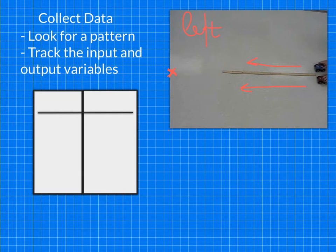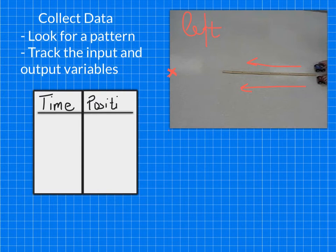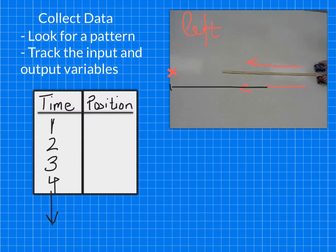We're going to collect data, and we're looking for a pattern, tracking the input and output variables. At every second that passes, I keep track of the seconds — so this is going to be time over here. I want to know what position the car is at at every time: at one second, two seconds, three seconds, four seconds, and so on. In the video, we tracked and wrote down the position marker from zero wherever it is at every second. After each second it moves to a new position, and we write down those values.